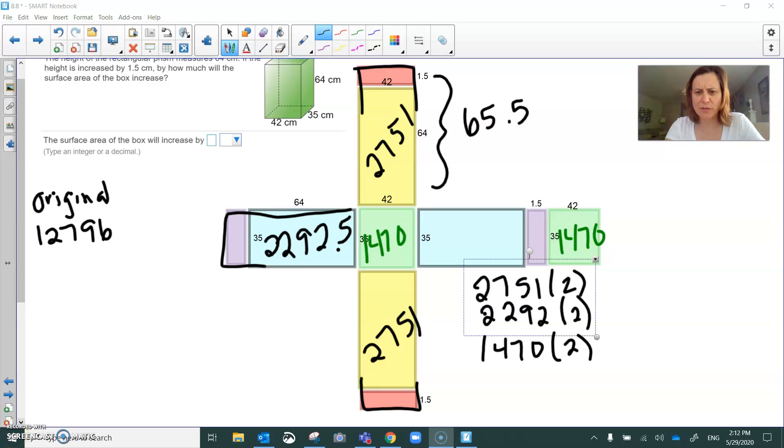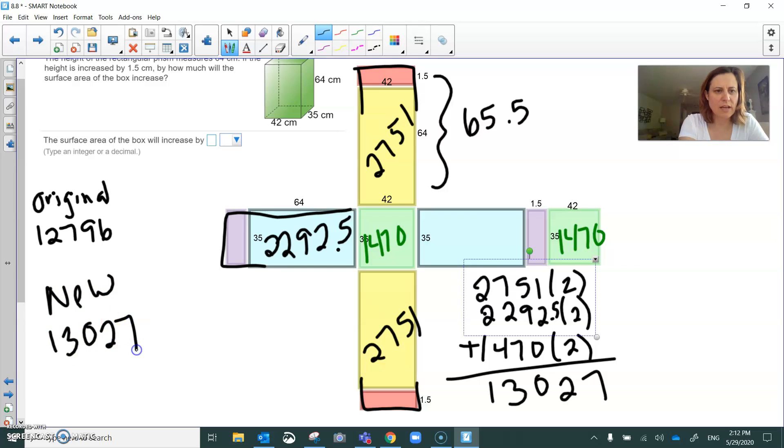One minor error. This was 2292.5. Oops. Okay, so when we add all of those up, we end up with a grand total of 13,027. And it's asking what the surface area of the box will increase by. So if we subtract the original from the new one, we should get that we'll increase by 231 centimeters squared.